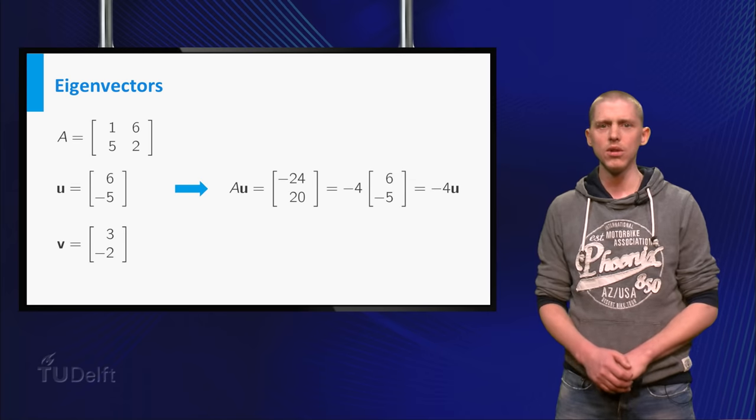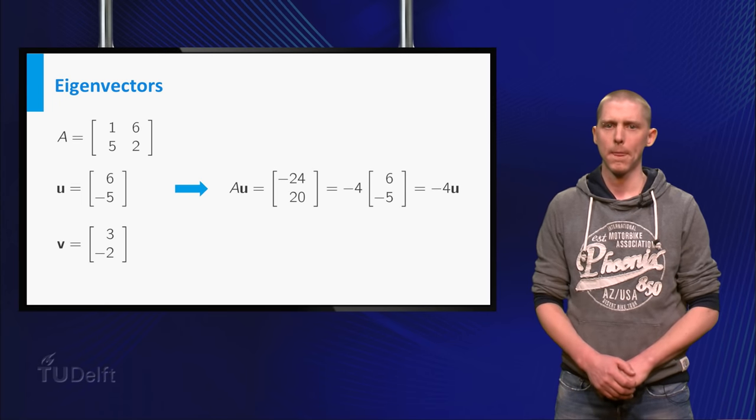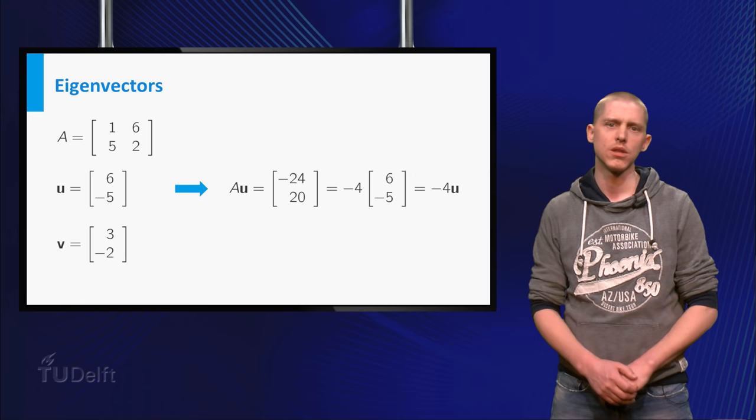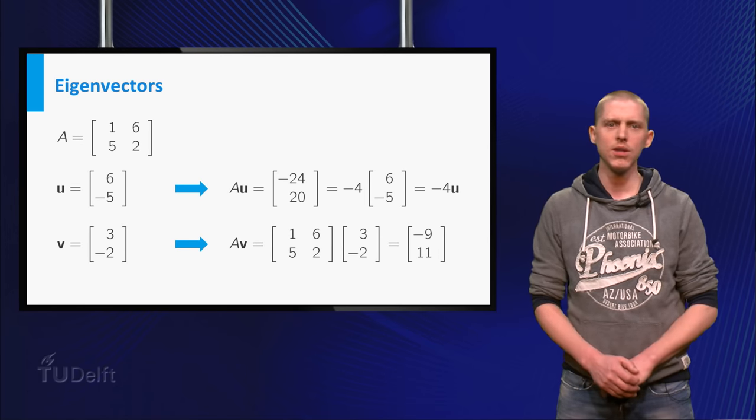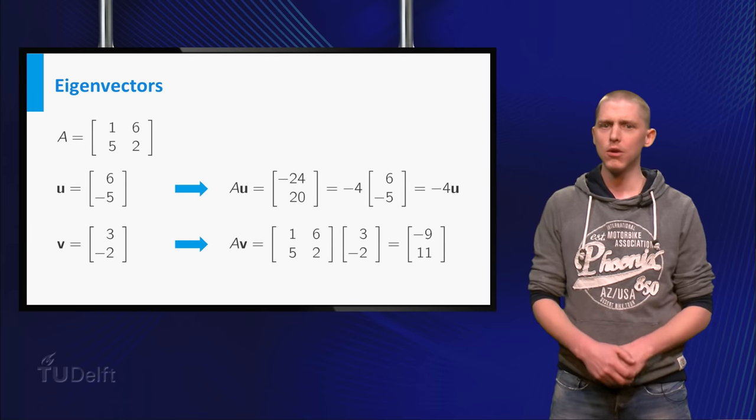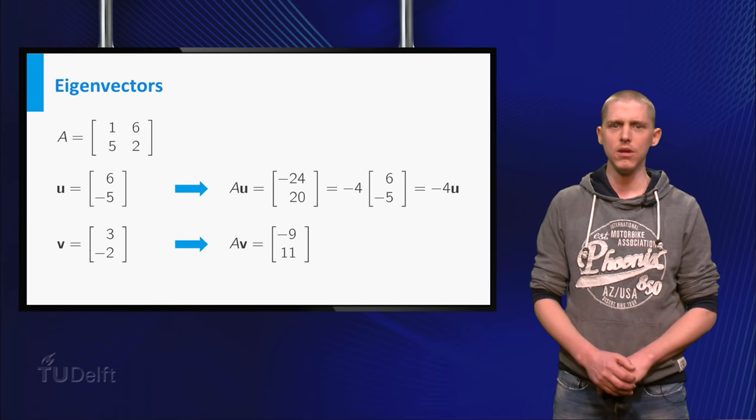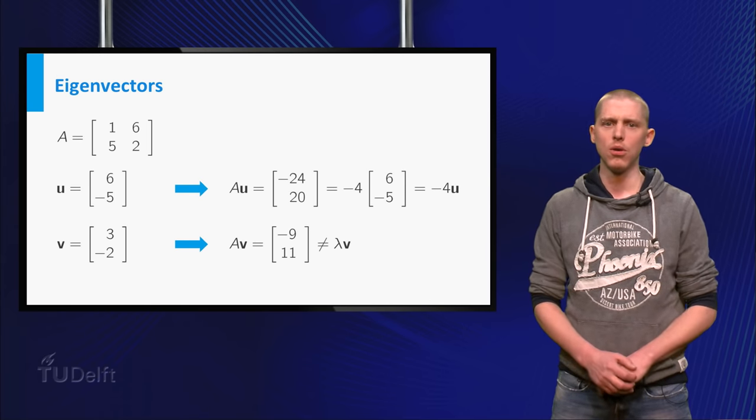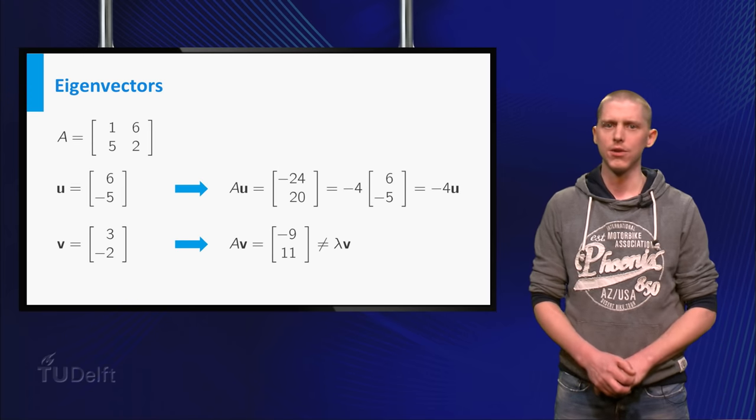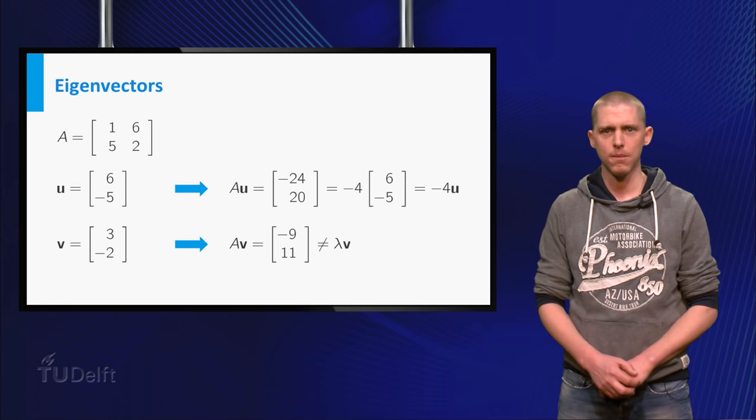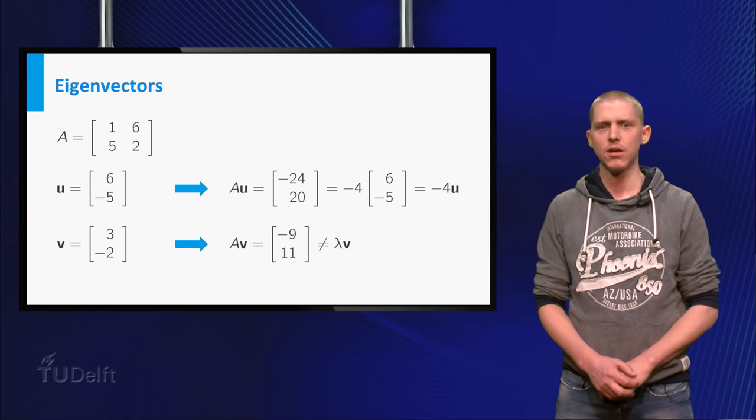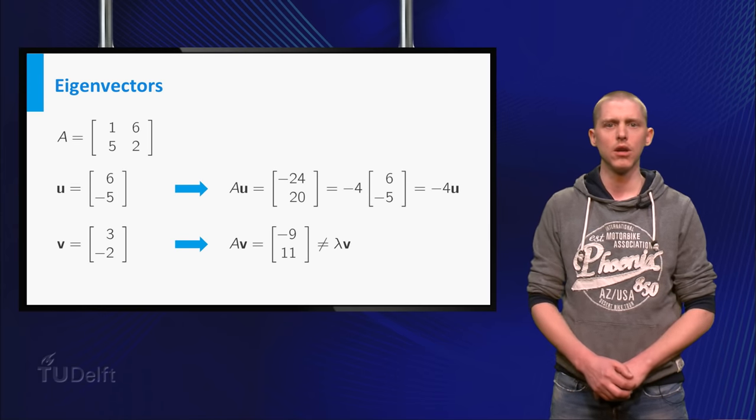Now let's check whether V is an eigenvector of A. A times V becomes minus 9, 11. If you compare A times V with V, you see that the first component of V is multiplied by minus 3, but the second component by minus 5 and a half. So you can safely say that V is not an eigenvector of A.